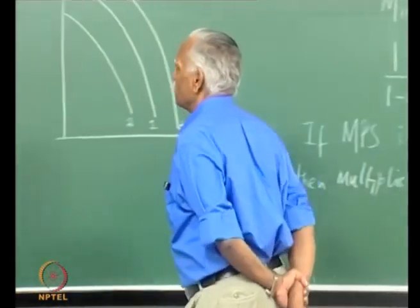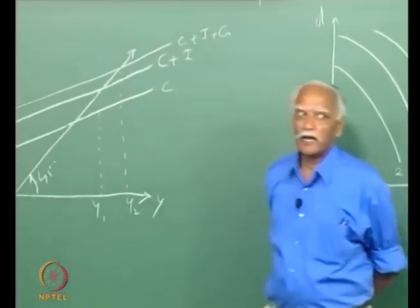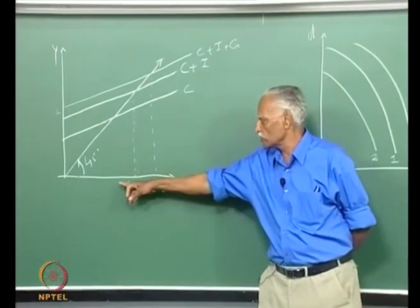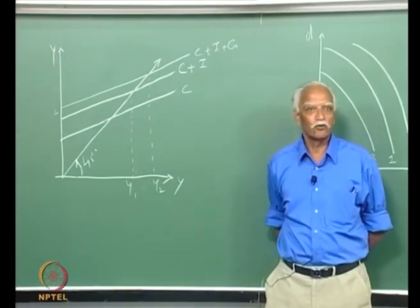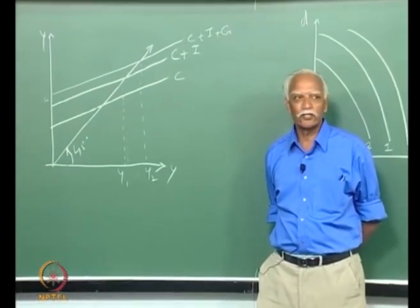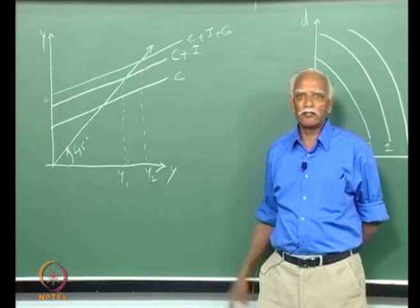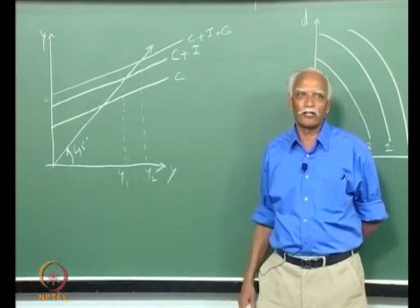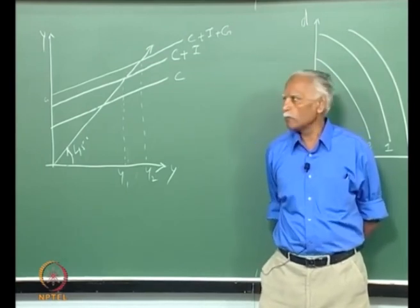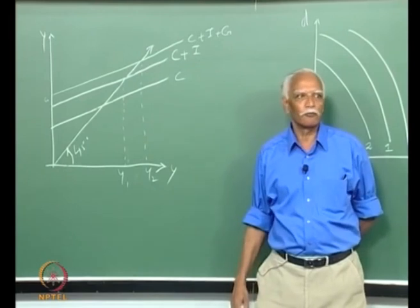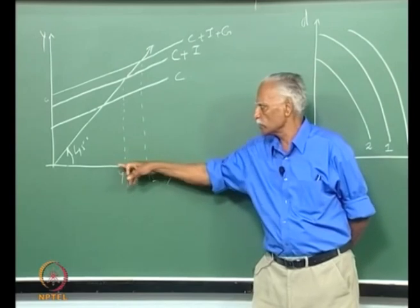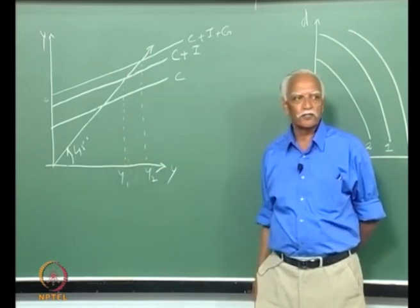Keynes was thinking in terms of a consumption function — a consumption-income relationship — where there was a minimum amount of consumption even with zero income, but after that, consumption increased at a particular fraction of income each time, and that fraction was the marginal propensity to consume. In this diagram, the line C shows the behavior of consumption as income expands. For every rupee of expansion in income, the expansion in consumption is less than one rupee — in other words, MPC is less than one. The slope of C is given by the marginal propensity to consume.